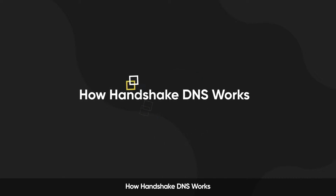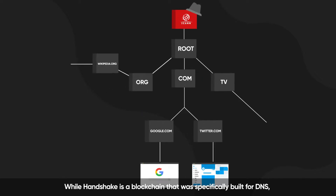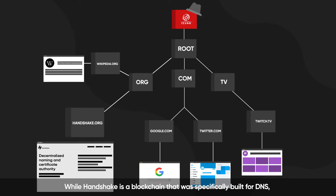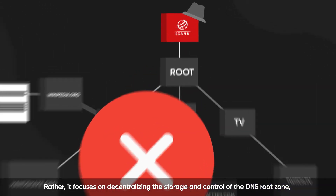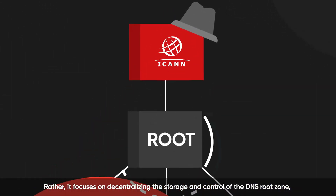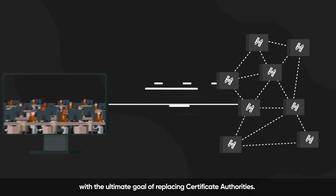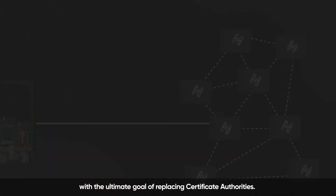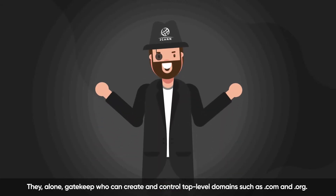How Handshake DNS works: while Handshake is a blockchain specifically built for DNS, it does not seek to decentralize the entire domain name system. Rather, it focuses on decentralizing the storage and control of the DNS root zone, with the ultimate goal of replacing certificate authorities. The root zone is currently controlled solely by ICANN, who alone gatekeeps